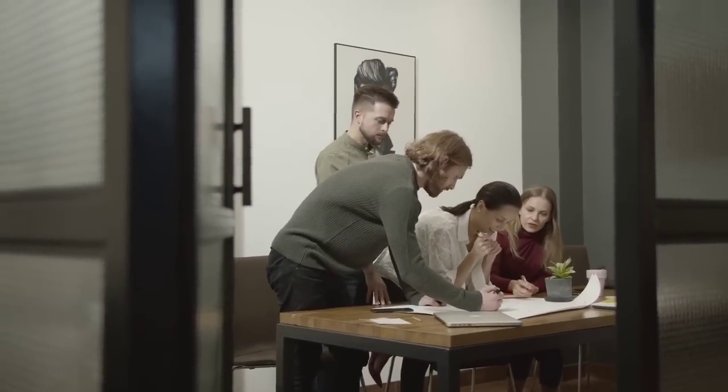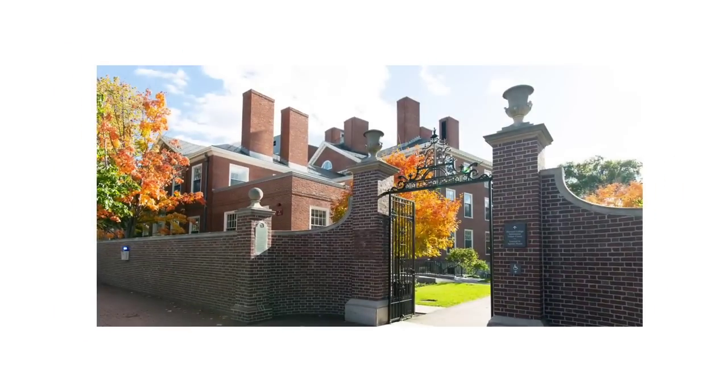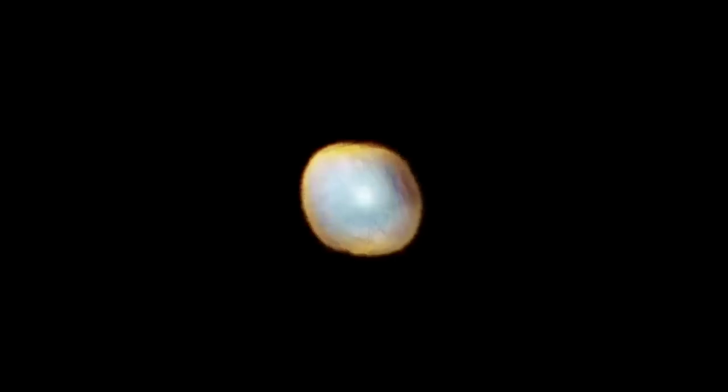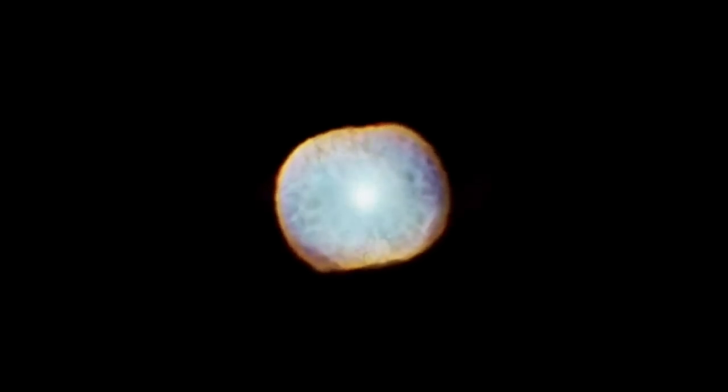According to a team led by Zucker and Alves of the University of Vienna and the Radcliffe Institute for Advanced Study at Harvard University, Per Tau shell is only a part of the bigger structure. The bigger structure is called the Radcliffe wave.